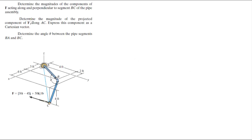now we're going to do these three problems. First, determine the magnitude of the components of F acting along and perpendicular to segment BC. Then determine the magnitude of the projected component of F along AC, and finally find the angle between the pipe segments BA and BC — this angle right here.